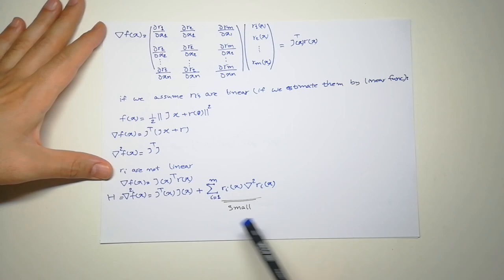It's not fixed everywhere. We have J of X. It's not a fixed number, it's a function.